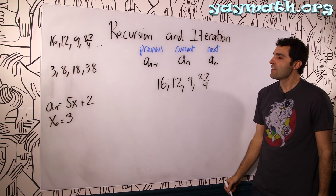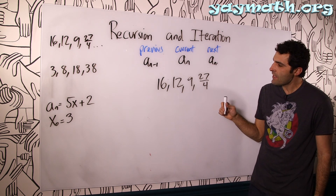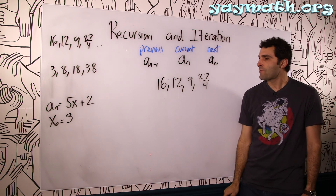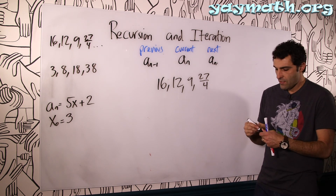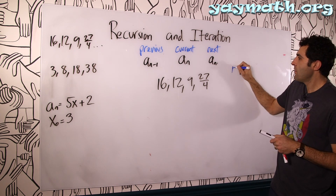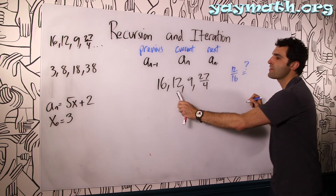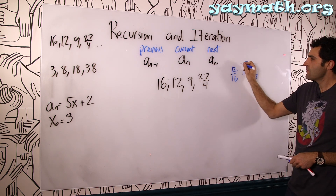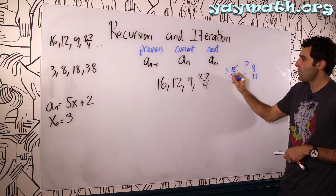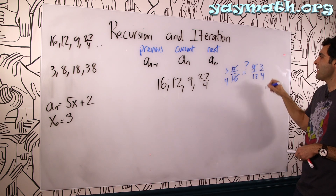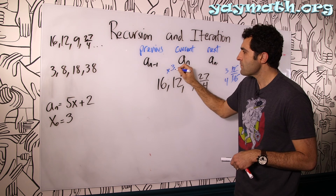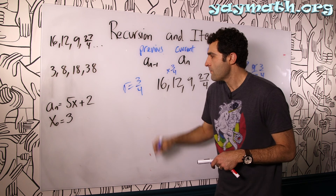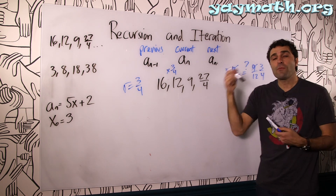Let's look at it — what type of sequence does it look like? Is it arithmetic? The differences are -4, -3... no, not arithmetic. Is it geometric? Let's check: 12 over 16 should equal 9 over 12. That's 3/4 and 3/4 — yes! This looks like times 3/4, so this is geometric with r = 3/4.